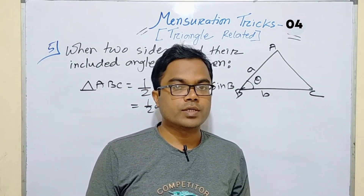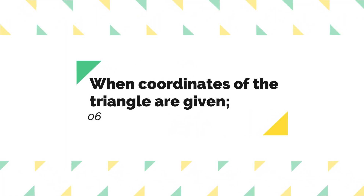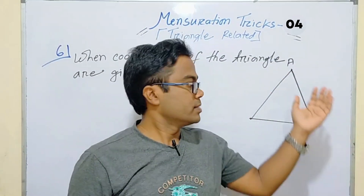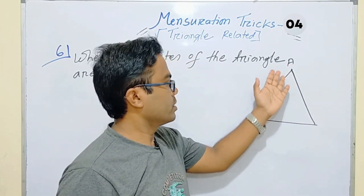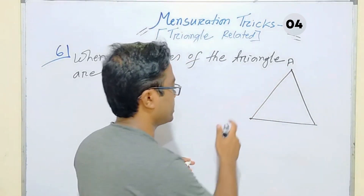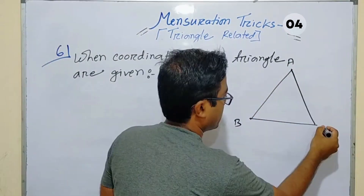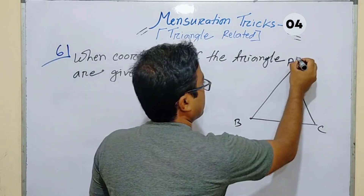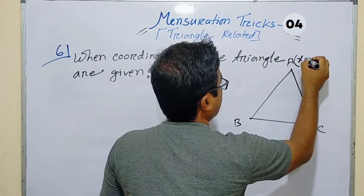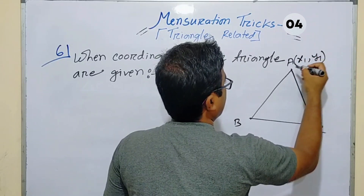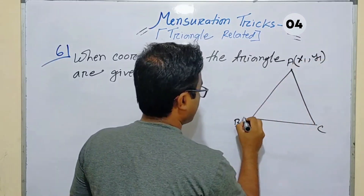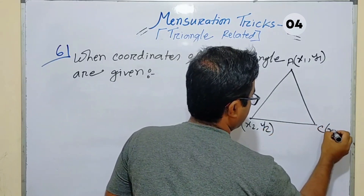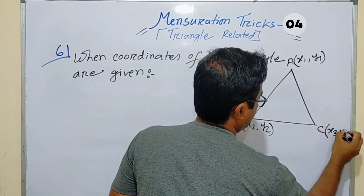The last method: when the coordinates of the vertices of the triangle are given, what is the area of the triangle? The three vertices are A, B, and C. You can say A is at coordinates (x1, y1), B is at (x2, y2), and C is at (x3, y3).